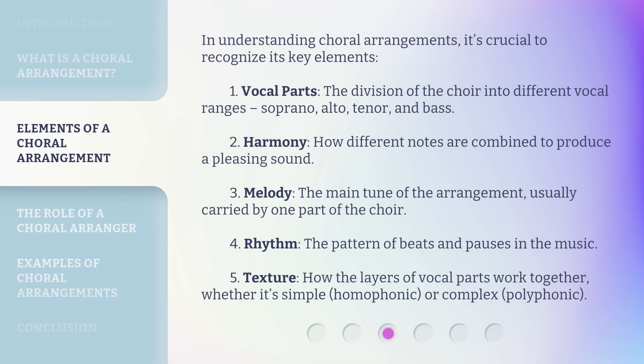In understanding choral arrangements, it's crucial to recognize its key elements. 1. Vocal parts: the division of the choir into different vocal ranges — soprano, alto, tenor, and bass. 2. Harmony: how different notes are combined to produce a pleasing sound. 3. Melody: the main tune of the arrangement, usually carried by one part of the choir. 4. Rhythm: the pattern of beats and pauses in the music. 5. Texture: how the layers of vocal parts work together, whether it's simple (homophonic) or complex (polyphonic).